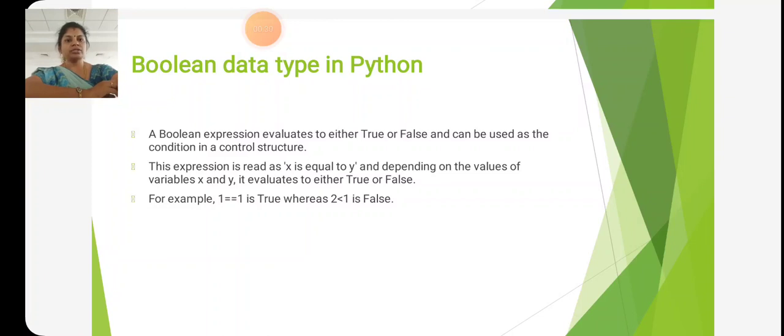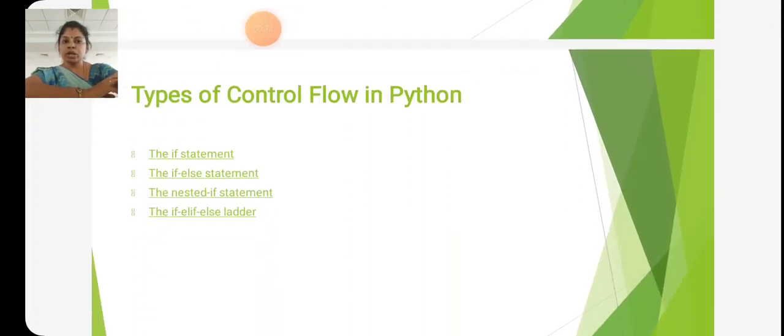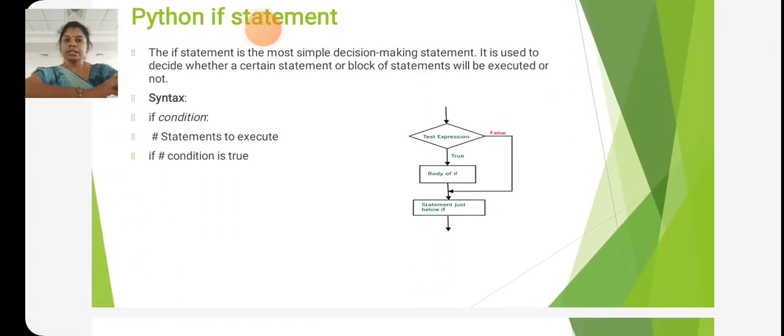Types of flow control in Python include the if statement, if-else statement, nested if statement, and if-elif-else ladder. The if statement is the most simple decision-making statement. It is used to decide whether a certain statement or block of statements can be executed. The syntax is: if condition: statements. Here is the diagram for the if statement.